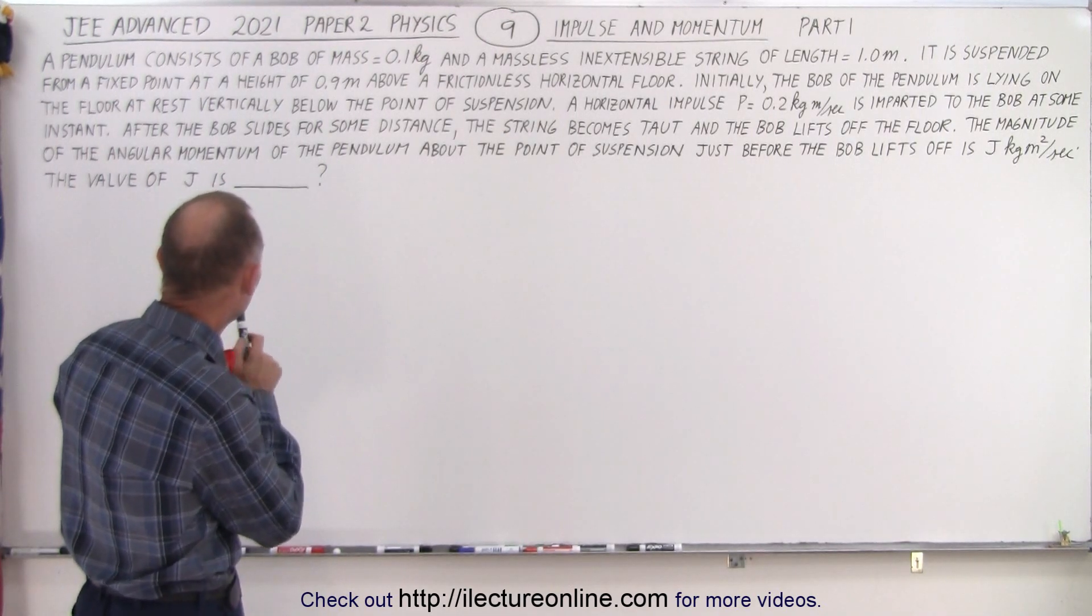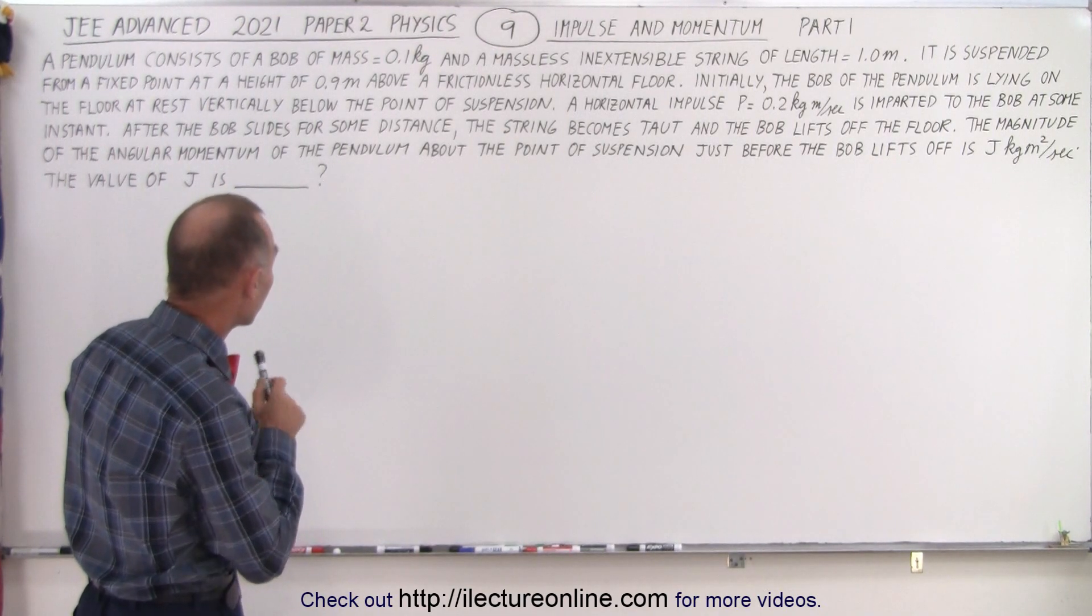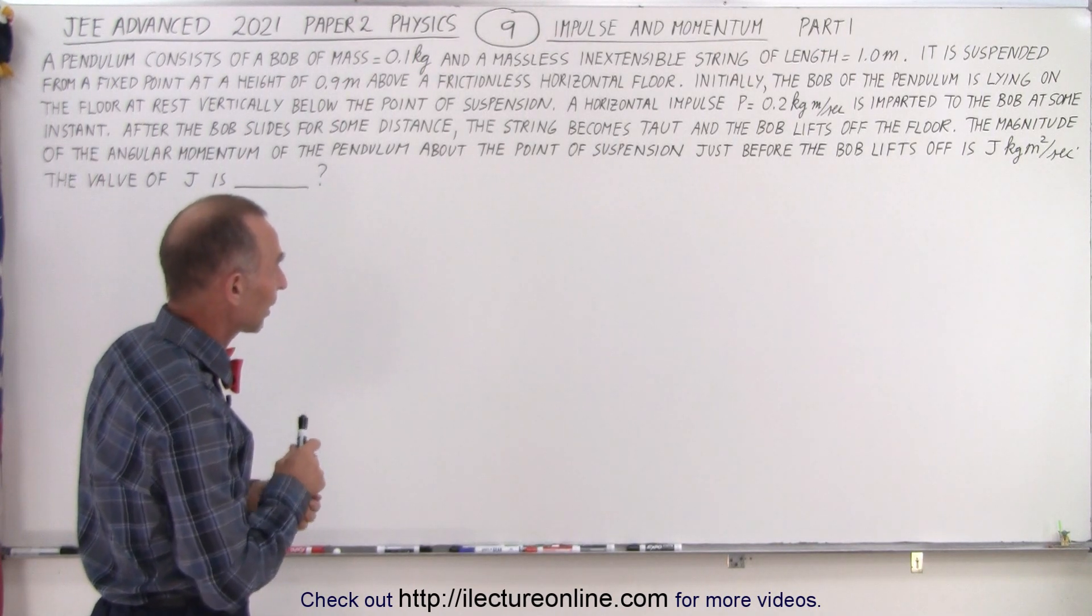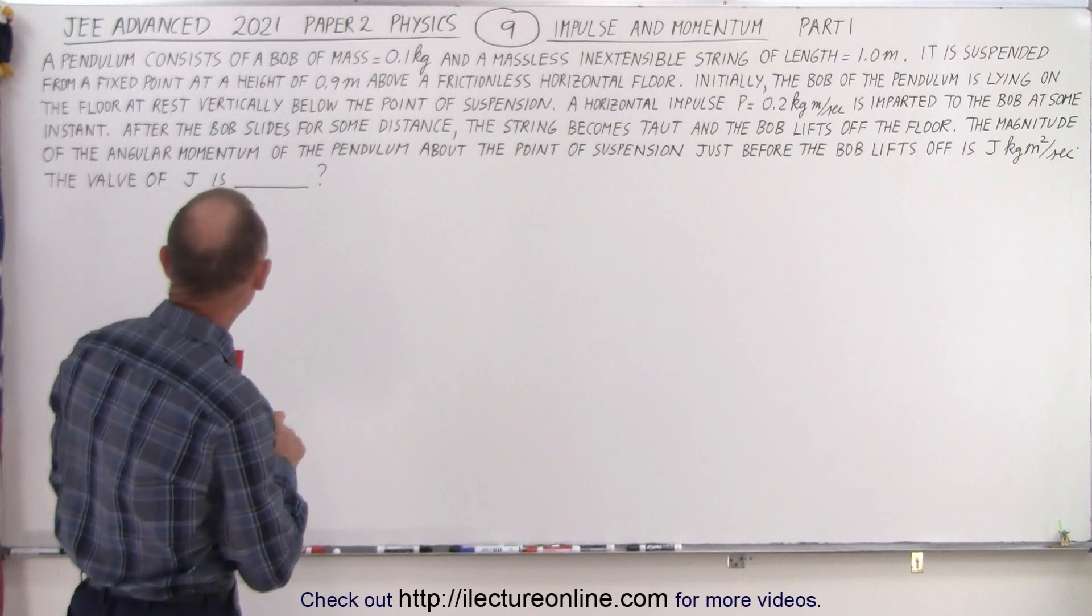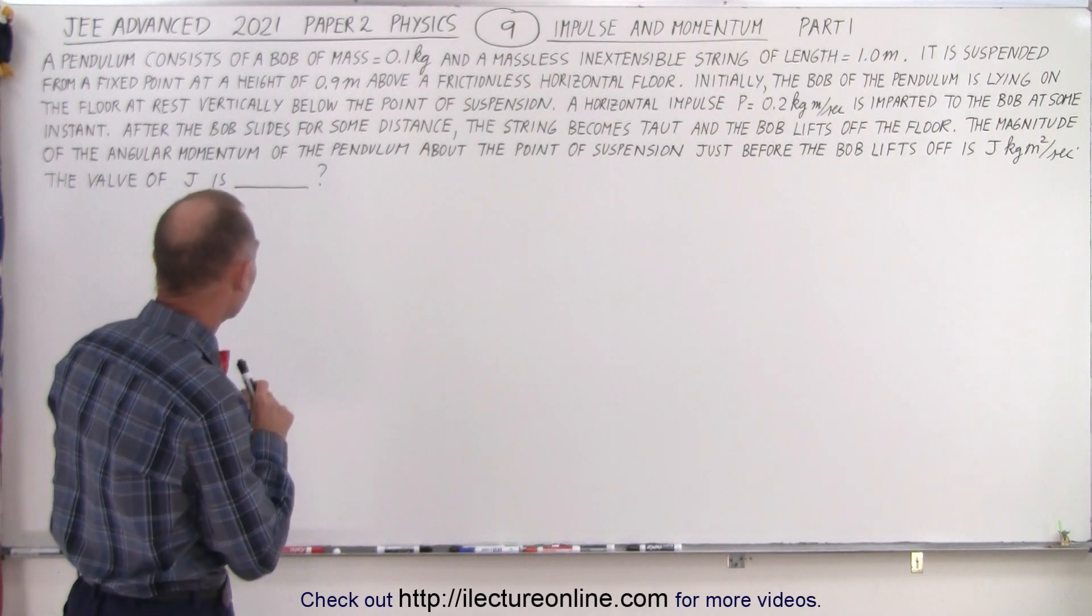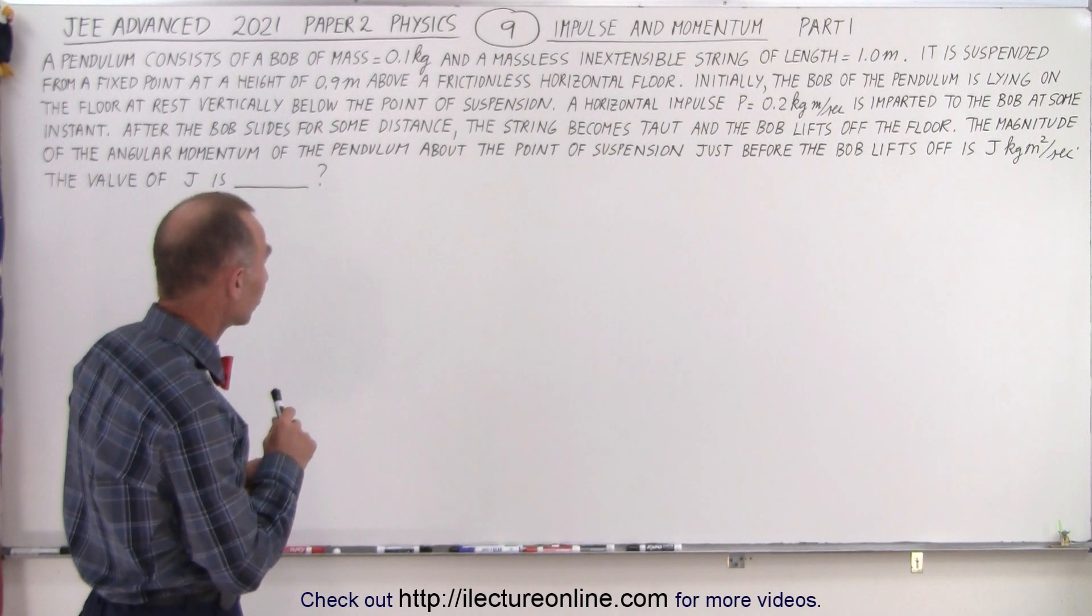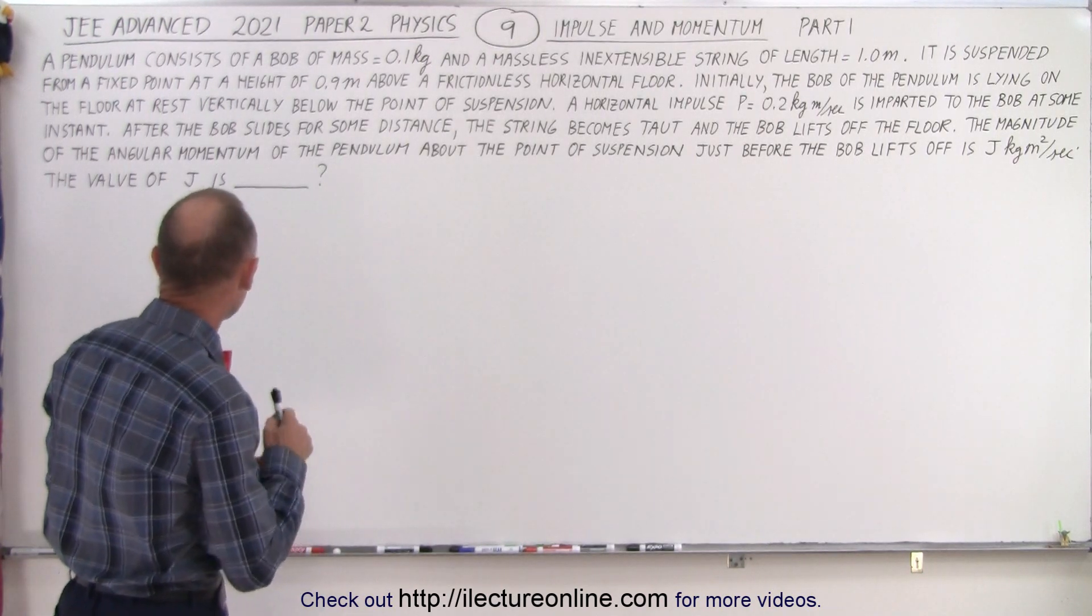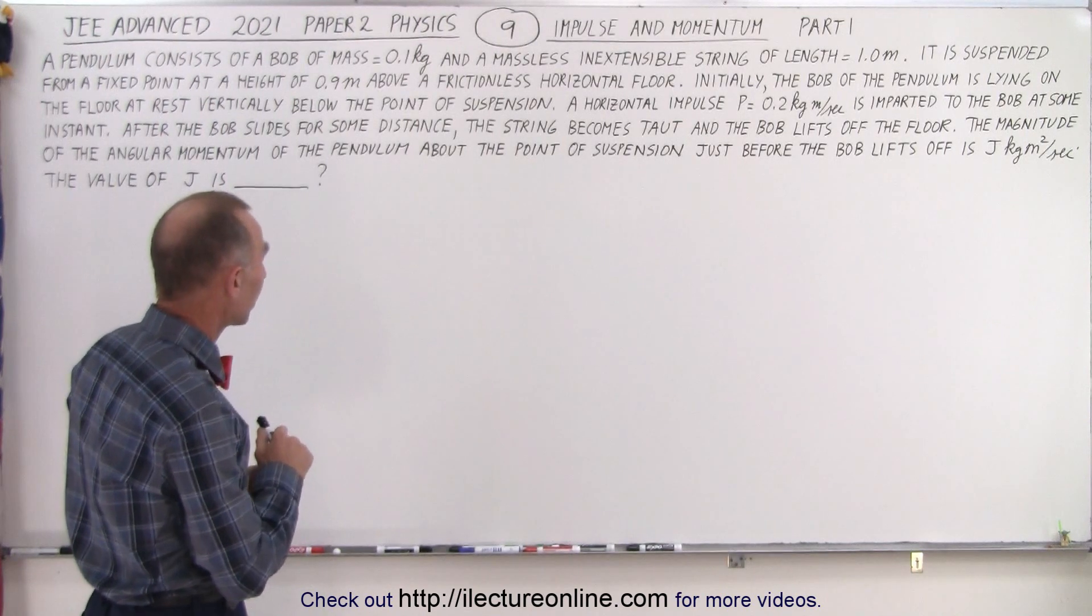We have a pendulum that consists of a bob of mass 0.1 kilogram and a massless inextensible string of length 1 meter. It is suspended from a fixed point at a height of 0.9 meters above a frictionless horizontal floor. Initially the bob of the pendulum is lying on the floor at rest vertically below the point of suspension.